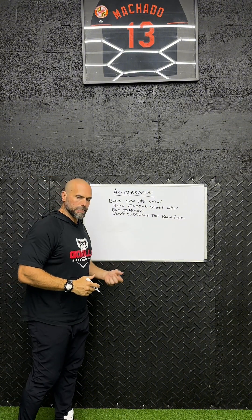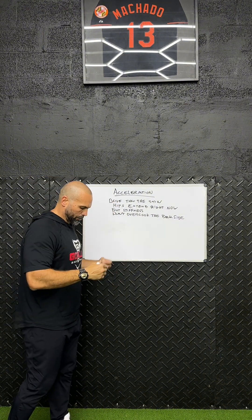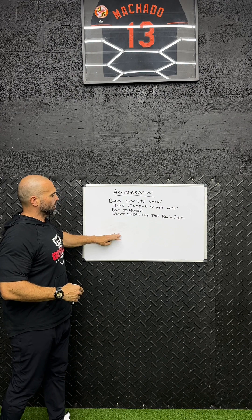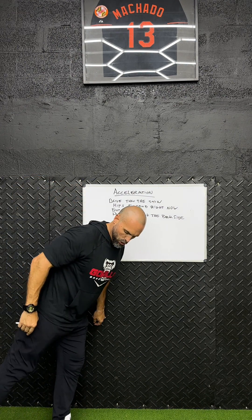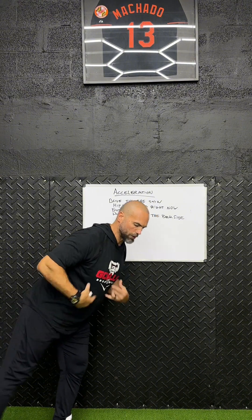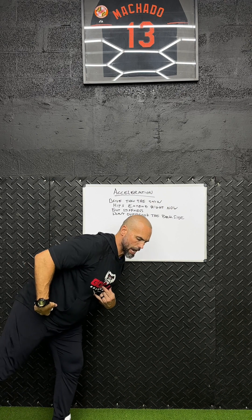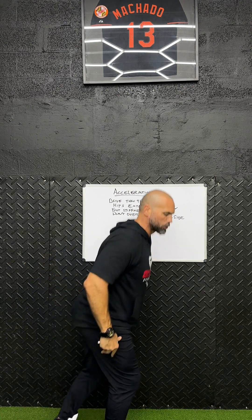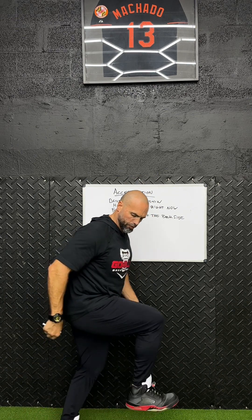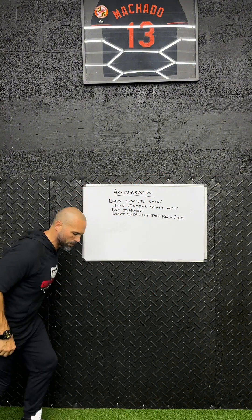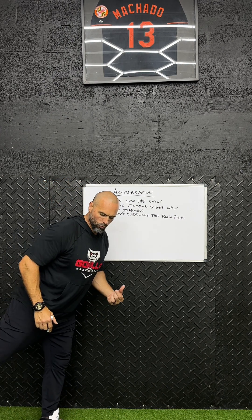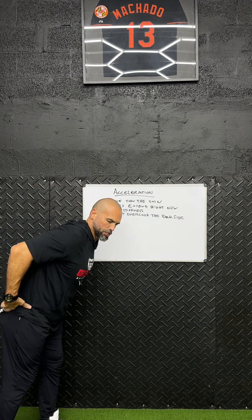We don't want to overcook the backside — this applies throughout the entire sprint but primarily in our acceleration. If we over-push on the back end, the foot is going to keep kicking back, throwing me off. Now my chest is forward, my hip is back, and I'm not able to get into an optimal position to push forward on the next step. If I'm kicking back this way, I'm going to land with my foot underneath me and can't bring the foot forward to attack back into the ground — which is what we want. We always want to drive the foot forward and drive it back into the ground. Overcooking the backside also leads to inefficient hip positions.